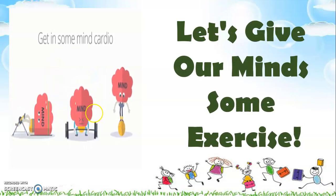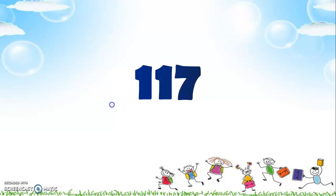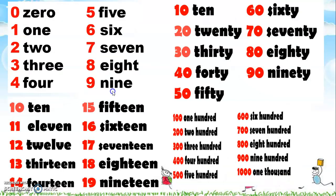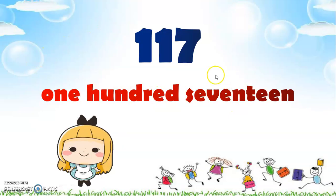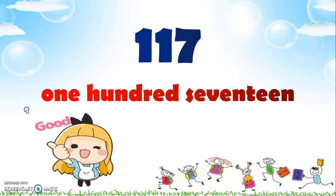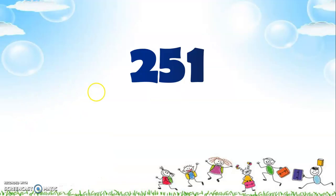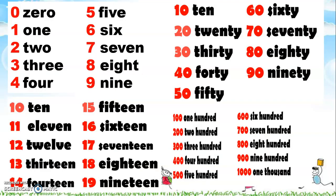Let's give our minds some exercise. We have 117 — how do we spell it in words? Look at our number chart and find 117. The answer is one hundred seventeen.